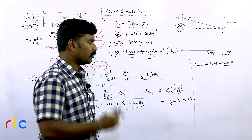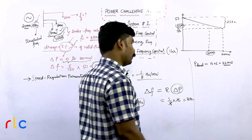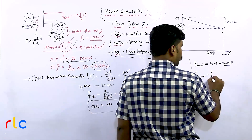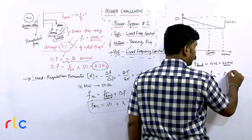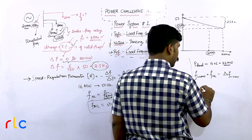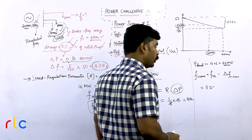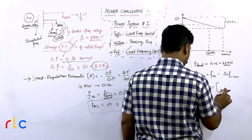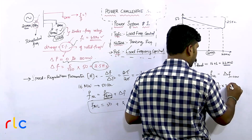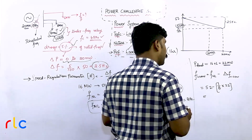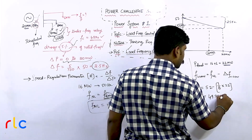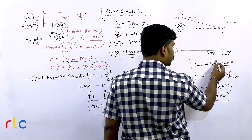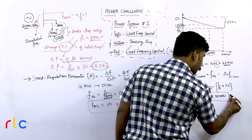By making the total load 22 megawatt, I check what the frequency will be. Frequency at 22 megawatt = no-load frequency − (regulation parameter × change in load) = 52 − (1/8 × 22) = 52 − 2.75 = 49.25 hertz. So when the load on the system is 22 megawatt, the frequency is 49.25 hertz.